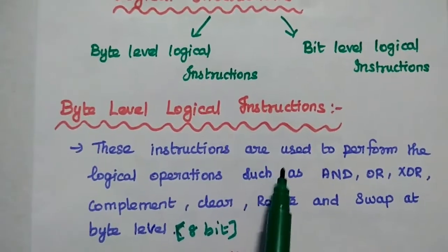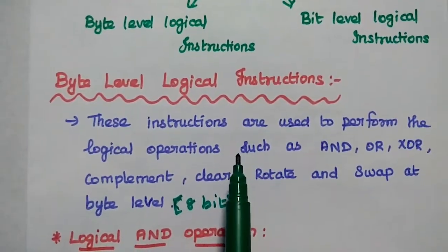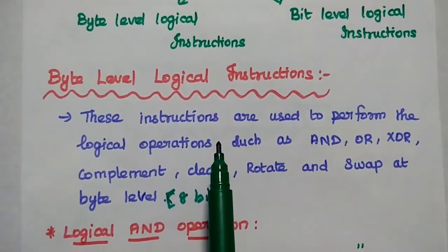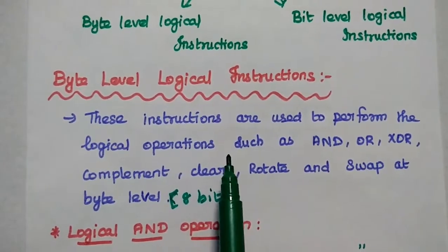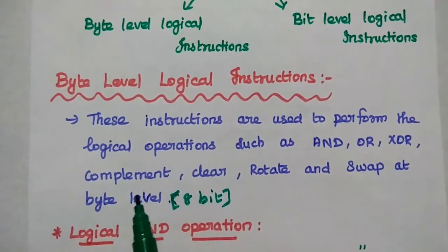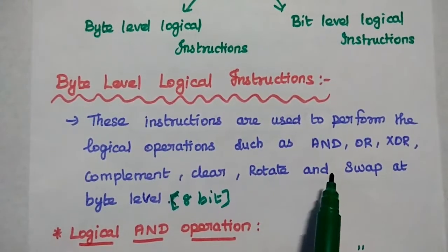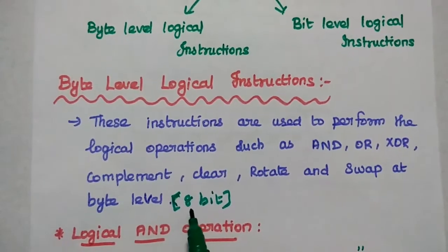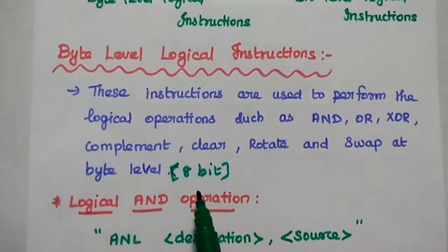Let's start with byte level logical instructions. These instructions are used to perform logical operations such as AND, OR, XOR, complement, clear, rotate, and swap at byte level. Byte level means 8-bit operation.